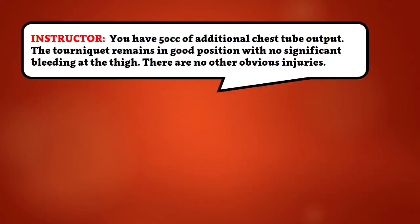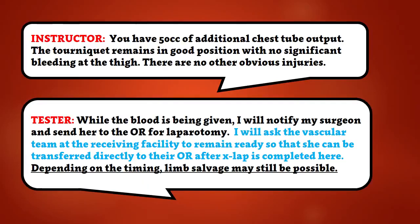You have 50 cc's of additional chest tube output. The tourniquet remains in good position with no significant bleeding at the thigh. There are no other obvious injuries. While the blood is being given, I will notify my surgeon and send her to the OR for laparotomy. I will ask the vascular team at the receiving facility to remain ready so that she can be transferred directly to their OR after the ex-lap is completed here. Depending on the timing, limb salvage may still be possible.